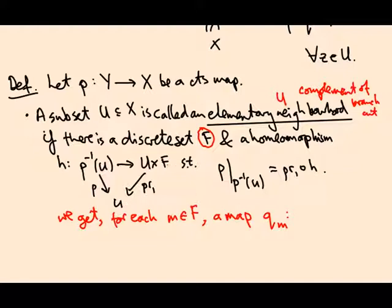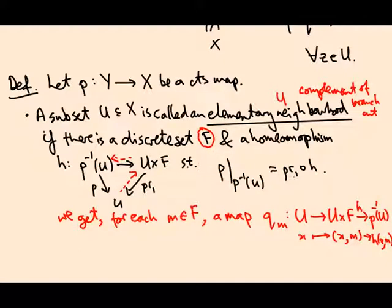This is a fancy way of saying we can find some region which is like a complement with a branch cut. And for each element of some discrete set, we can find an inverse of p that goes on that elementary set, that goes first to U times this discrete set and then by the inverse of this homeomorphism to p⁻¹(U). That's what's behind this definition.